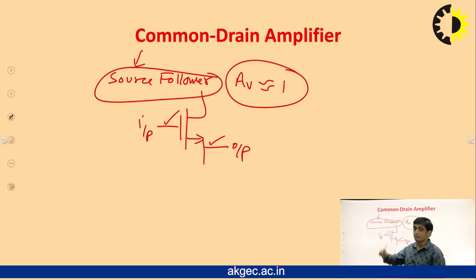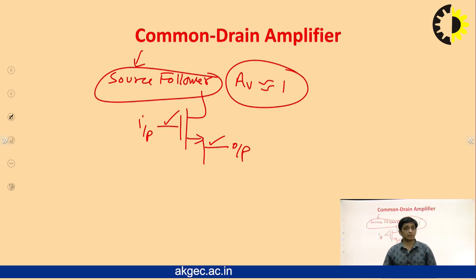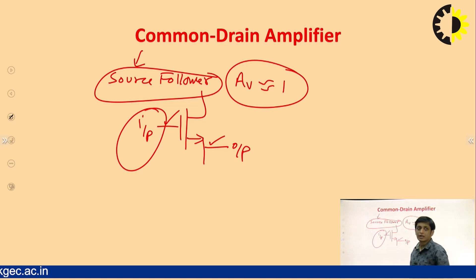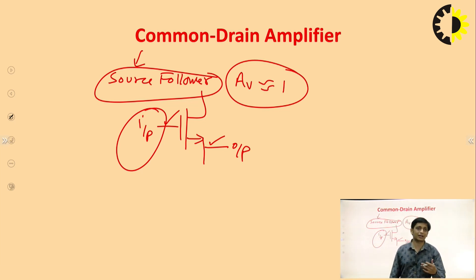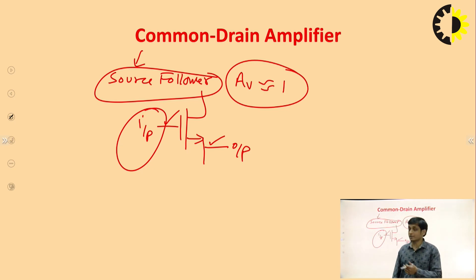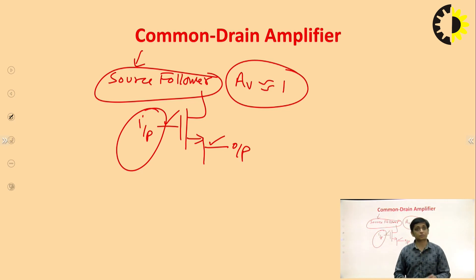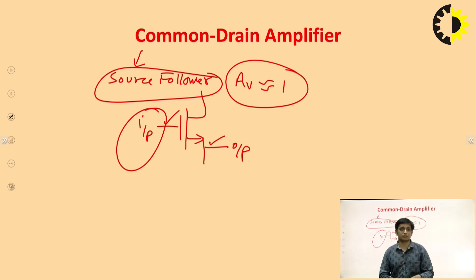The advantage of the common drain amplifier is its very high input resistance — of course, because the input signal is applied at the gate terminal, so the input resistance is high since gate current is zero. Also, the output resistance of common drain is very low. That is why the common drain amplifier is used to connect a high resistance source to a low resistance load in impedance matching.